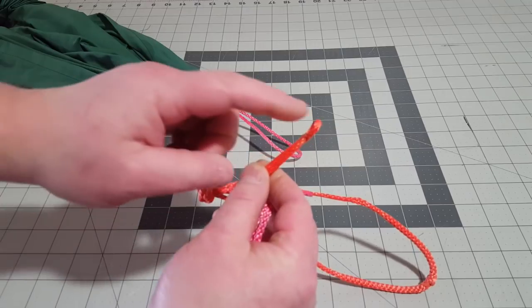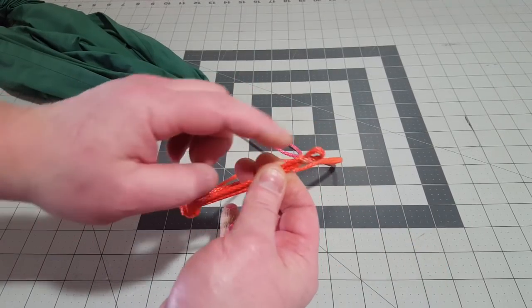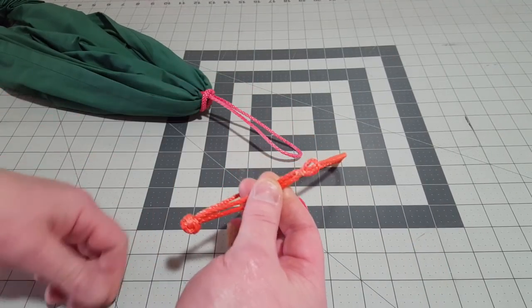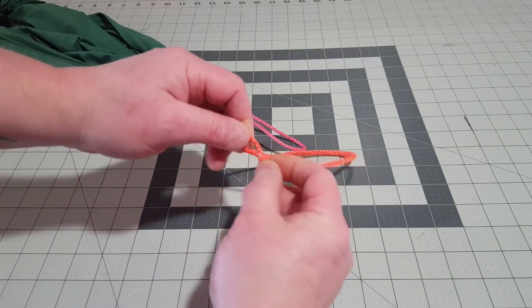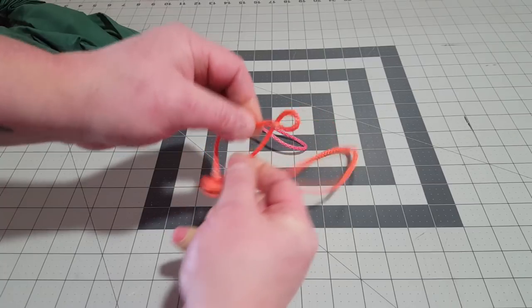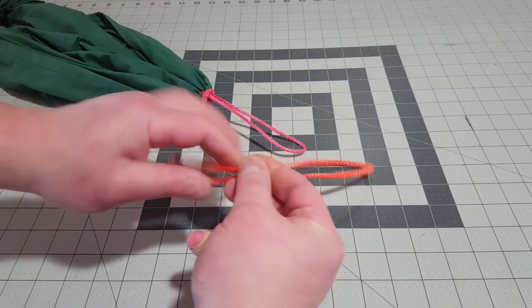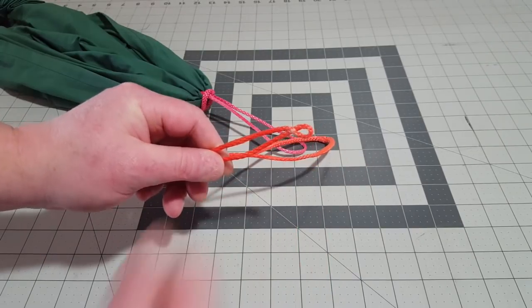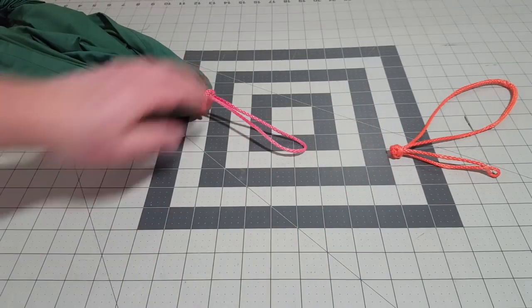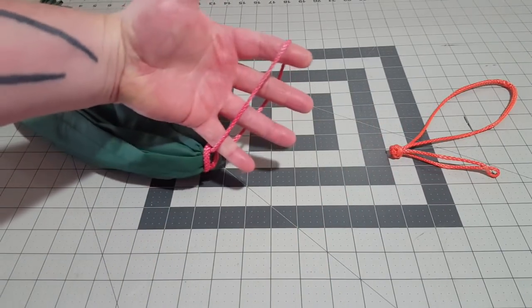One problem with doing it this way is the noose. If you study soft shackles, you realize that the noose is the fail point for all soft shackles. For one, it's the moving part of the shackle, this is where you're constantly going to be manipulating this thing. And for two, you only have one strand of strength at this point, so this is a potential fail point.